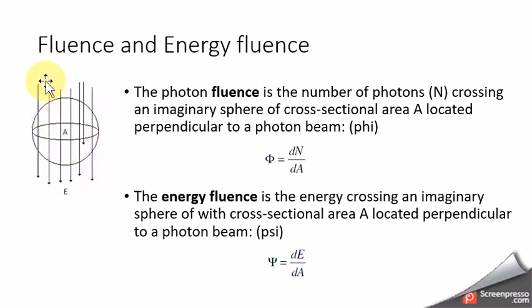The photon fluence is the number of particles passing through this cross-section perpendicularly divided by the area of this cross-section. So energy fluence is just the energy multiplied by the photon fluence.